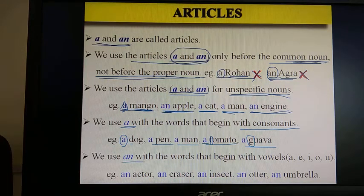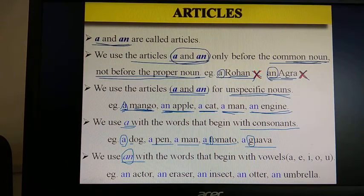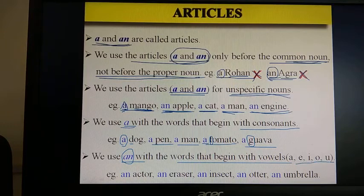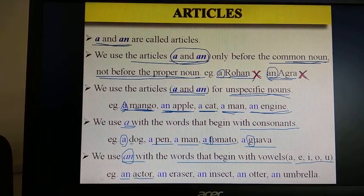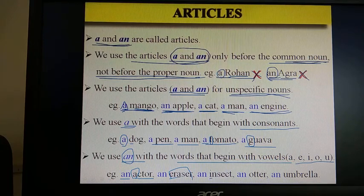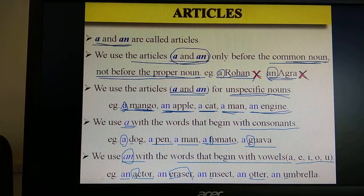We use article an with the words that begin with vowels — a, e, i, o, u. When the word begins with a vowel, you use article an; otherwise, article a. For example: an actor — the word actor begins with vowel a; an eraser — begins with vowel e; an insect — begins with vowel i; an author — begins with vowel o; an umbrella — begins with vowel u. Therefore, in all these words, article an is used.